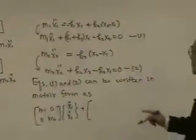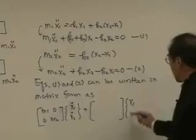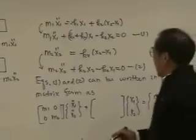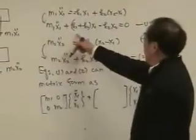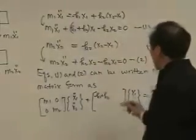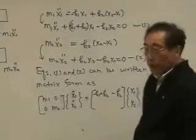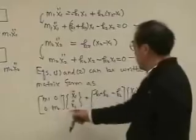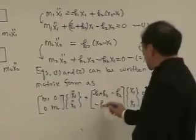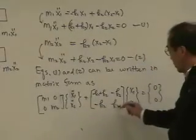And the K matrix. I have here X1, X2 is equal to 0. What do I have? K1 plus K2, and then I have minus K2. This completes equation 1 in matrix form. And the second equation is M2X2, and then I have minus K2X1, and K2X2.